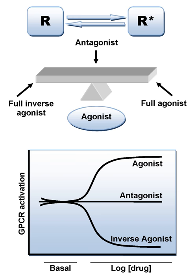Two examples of competitive adrenergic antagonists are propranolol and phentolamine. Phentolamine is a competitive and non-selective α-adrenoreceptor antagonist. Propranolol is a β-adrenoreceptor antagonist.